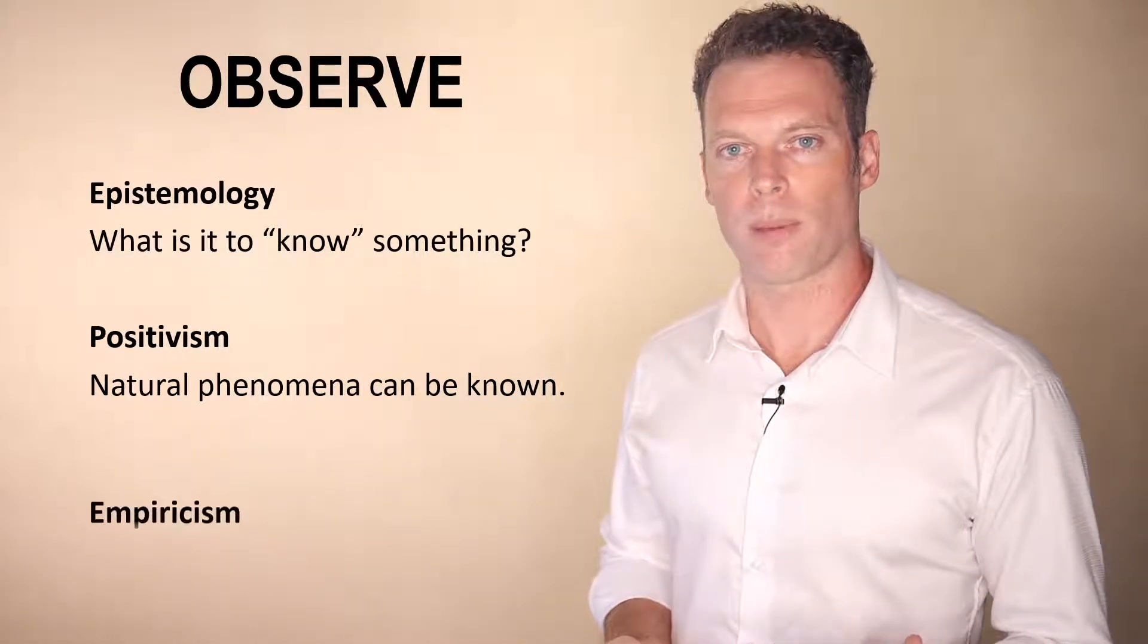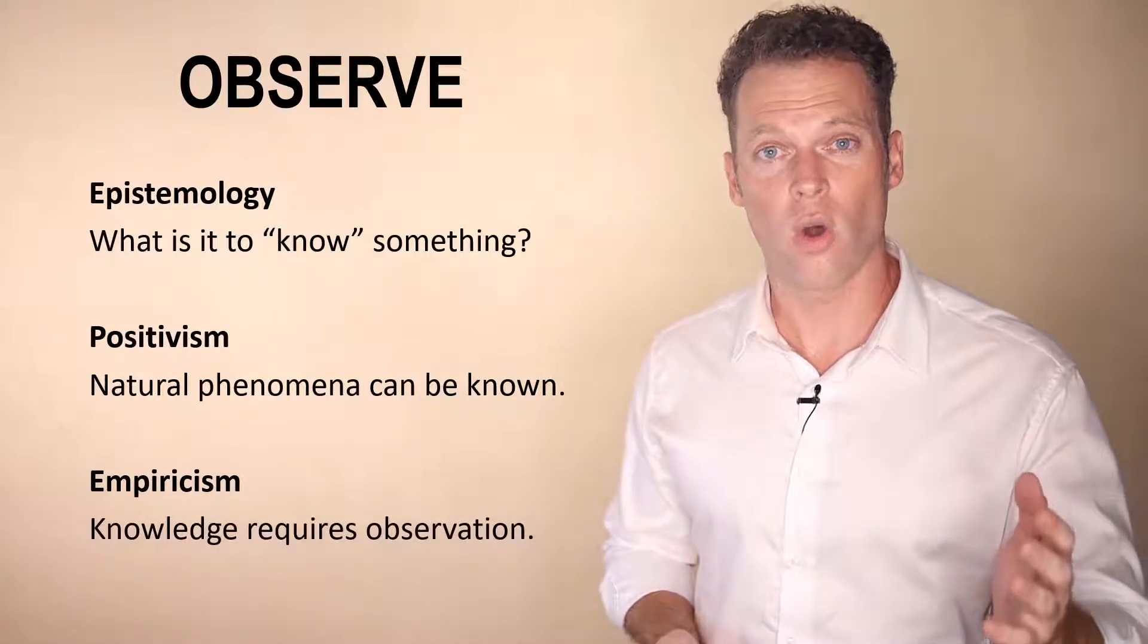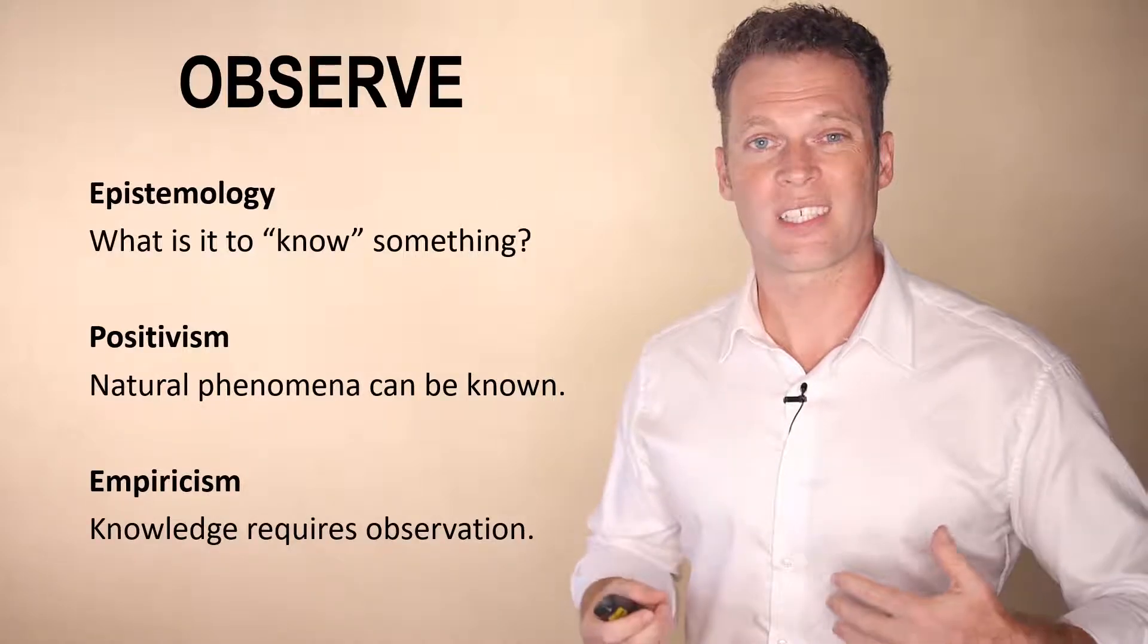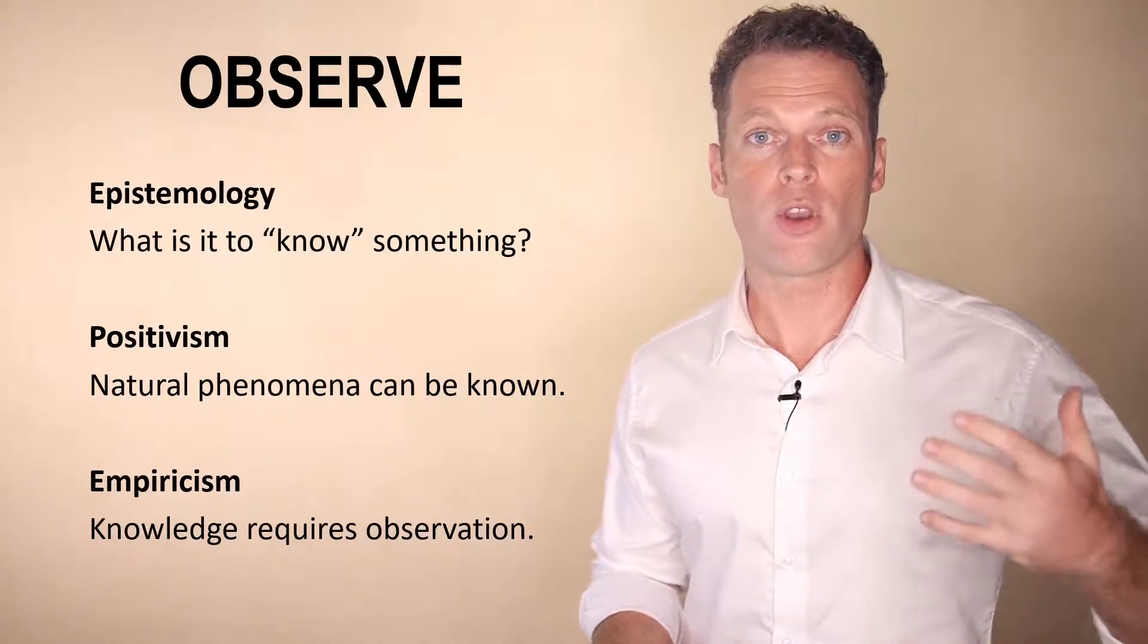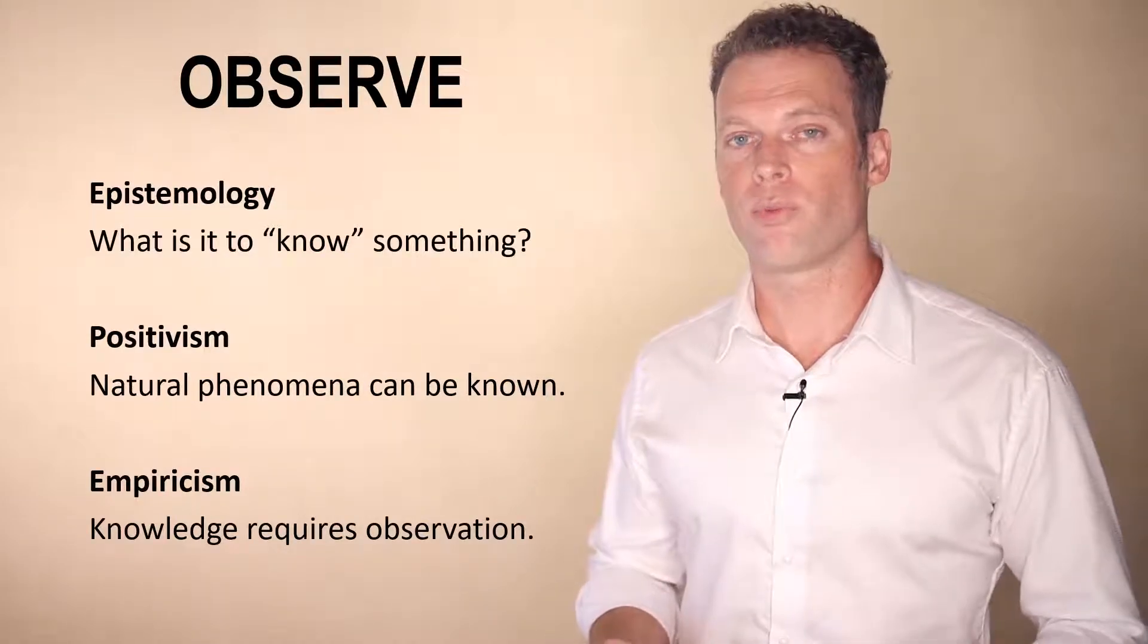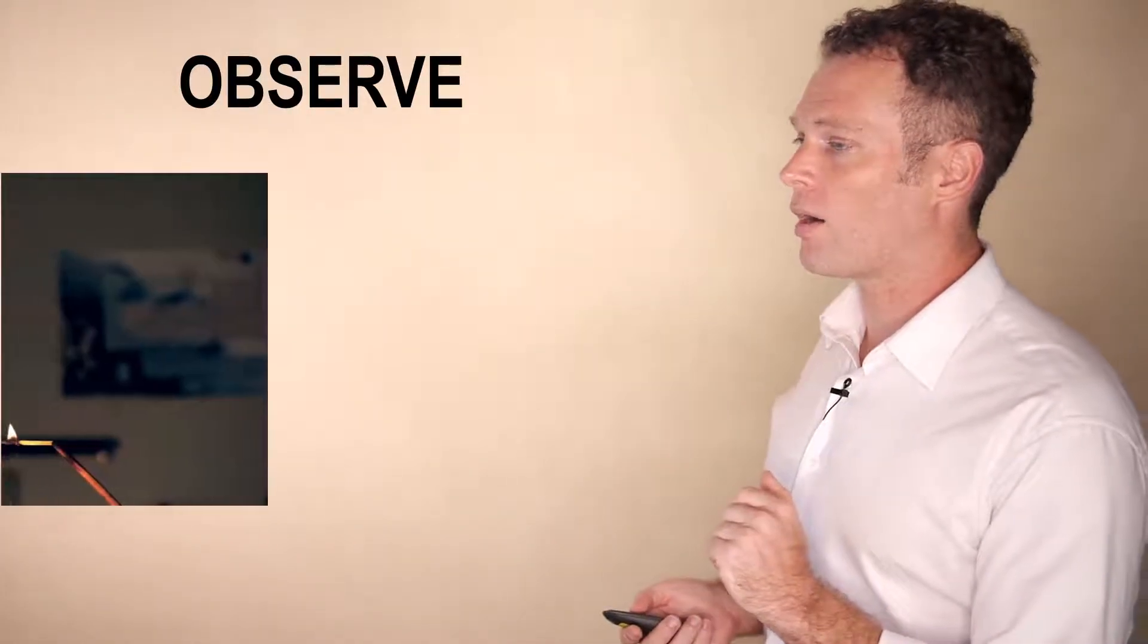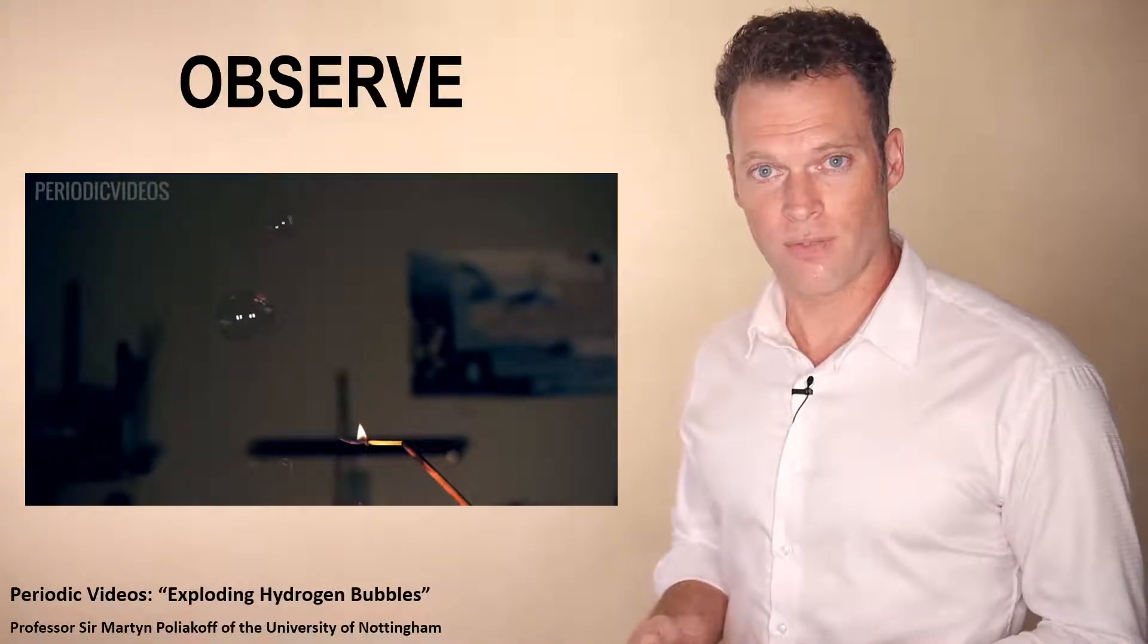Well, we need to make some observations. This is the idea of empiricism. We can know through observing. And so, the scientific method is about knowing things about the natural world through making observations. Now, I'd like to give you one example of an interesting observation.